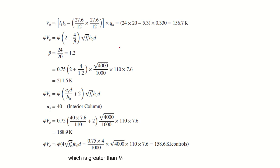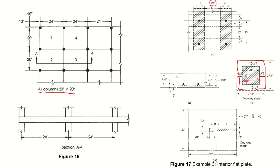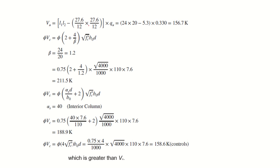The factored shear force Vu = (l1 × l2 − (27.6/12)²) × qu. The critical perimeter dimension is 27.6 inches in both directions. This gives Vu = 156.7 kips. The concrete shear capacity using the formula φVc = φ(2 + 4/β)√f'c × b₀d, where β = 24/20 = 1.2, gives φVc = 211.5 kips.